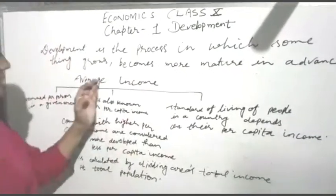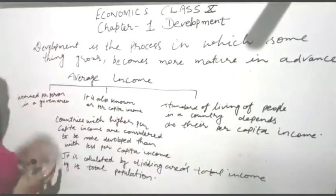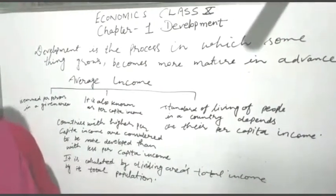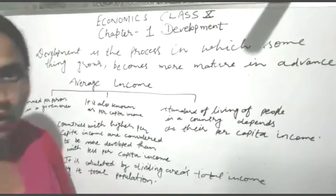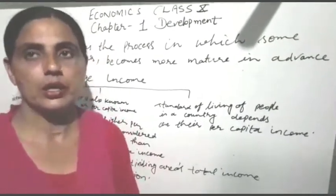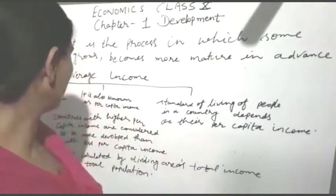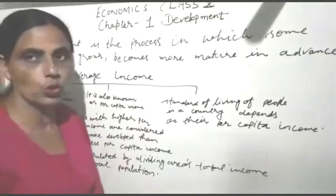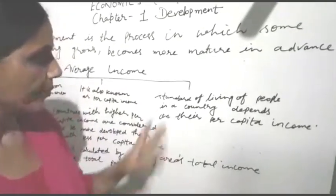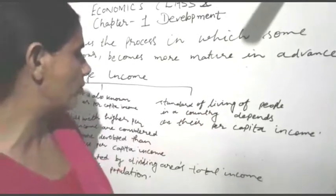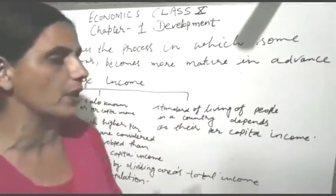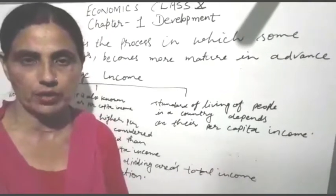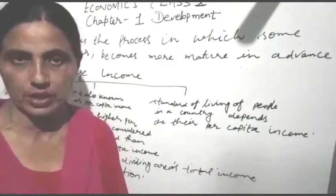Now let's discuss average income. Average income is the income earned per person in a given area. We can also discuss per capita income, which is what a person gets in the same area. The standard of living of people in a country depends on their per capita income.